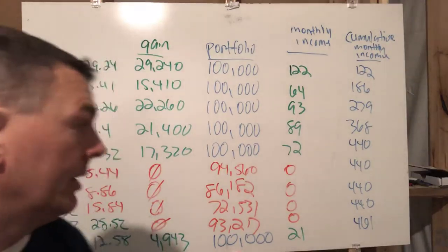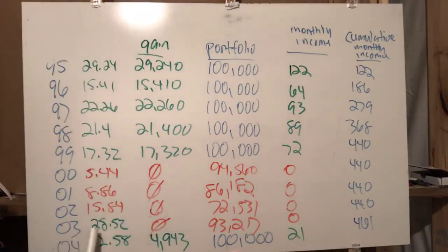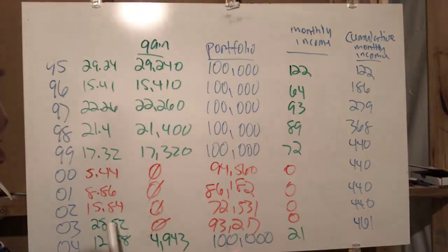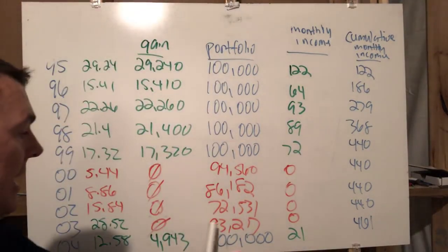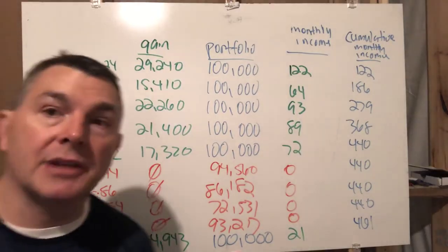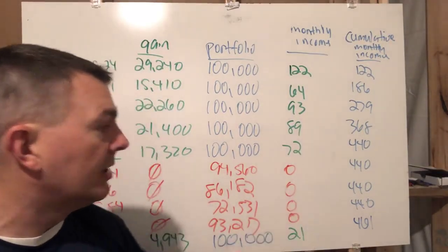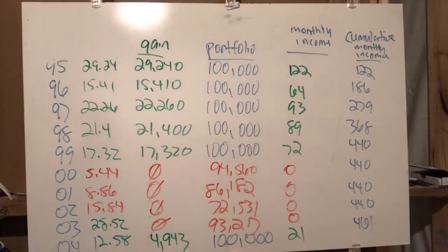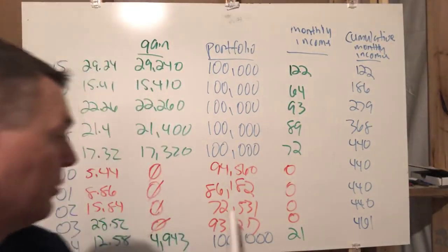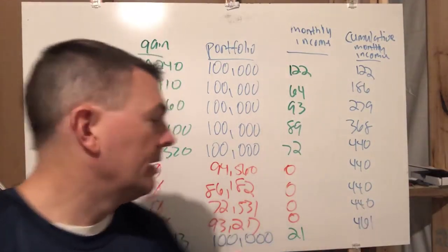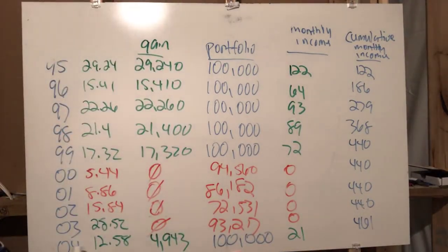By the end of 2002 we're down to seventy-two thousand five hundred thirty-one dollars, so we get zeros in terms of income streams because we have no gains. In 2003 the market was up twenty-eight point five two percent — so there should be gains to take, right? Well, no — because even after that market gain we're only at ninety-three thousand two hundred seventeen dollars. We're still below the hundred thousand dollar threshold, so there are four years of no new income and we're still at four hundred forty dollars a month.